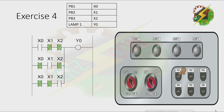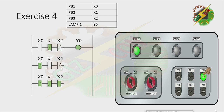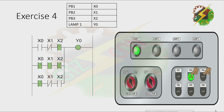Let's press PB1 — lamp turns on. Then PB2 — lamp turns on. Then PB3 — lamp turns on. Let's press PB1 together with PB3 — lamp turns off. Then PB2 together with PB1 — lamp turns off. Then PB2 together with PB3 — lamp turns off. Now pressing all three push buttons together — lamp turns off. That's how we solve Exercise 4.